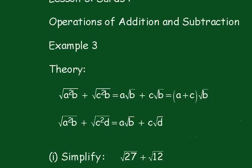And because these root b's are a common factor, we can take them out and just add the numbers in front. So we add the a and the c together.